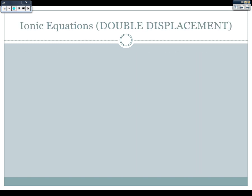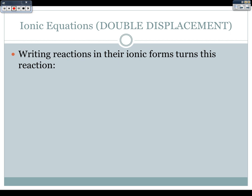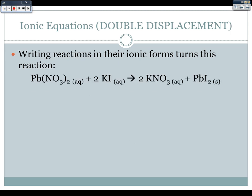We're going to do an example of a double displacement first. Writing reactions in their ionic form turns this reaction — lead(II) nitrate plus potassium iodide becoming potassium nitrate and lead(II) iodide — where lead(II) nitrate, potassium iodide, and potassium nitrate are all aqueous solutions, whereas lead(II) iodide is a solid or insoluble.